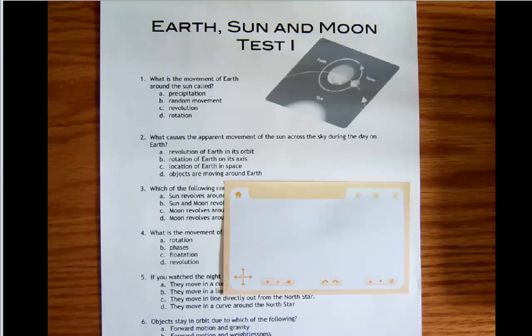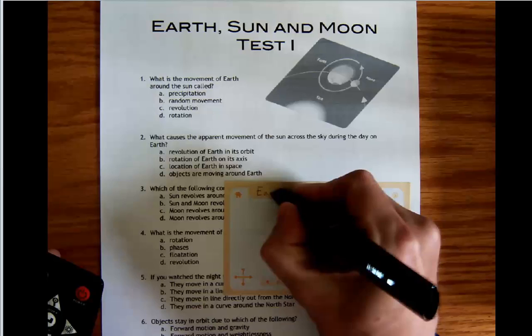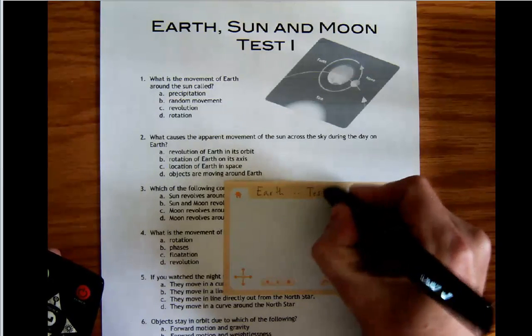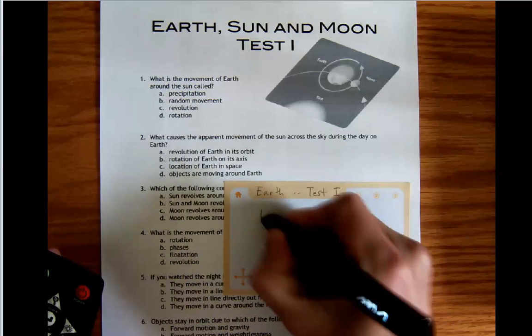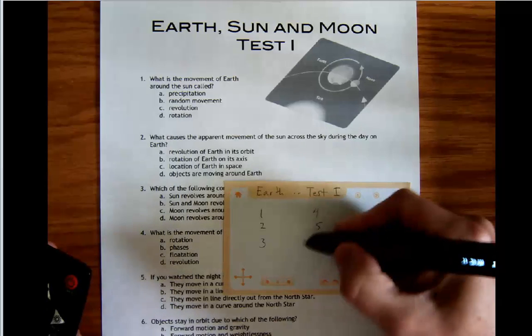Okay, the way we're going to do this is I'm going to take my Echo Smart Pen and I'm going to just write the name of the test on the top. It's the Earth, Sun and Moon test. And then I'm going to pre-write the numbers of the test, one through six.